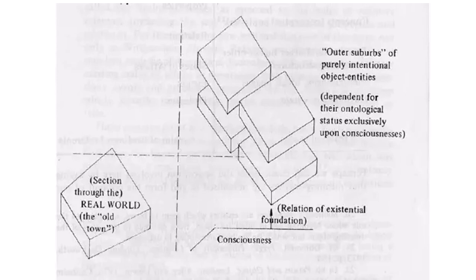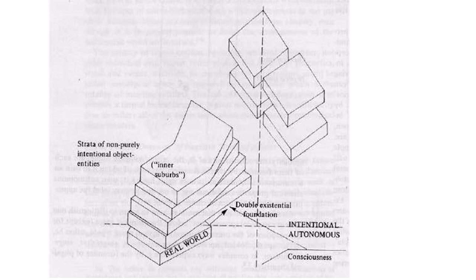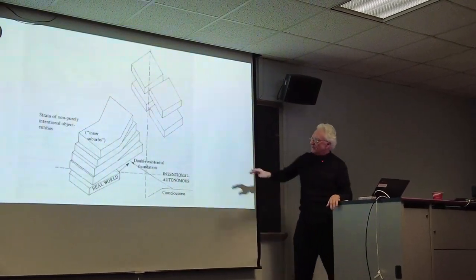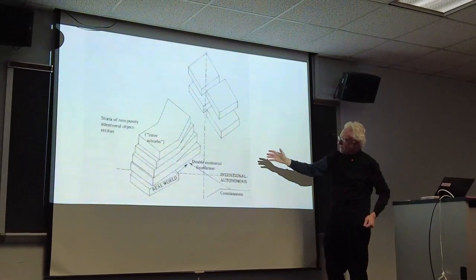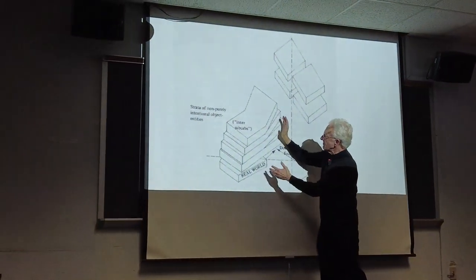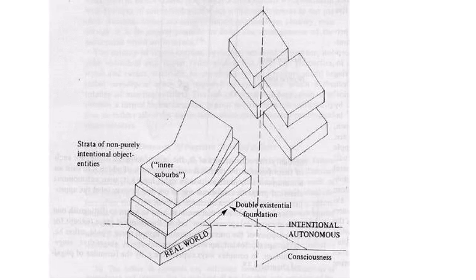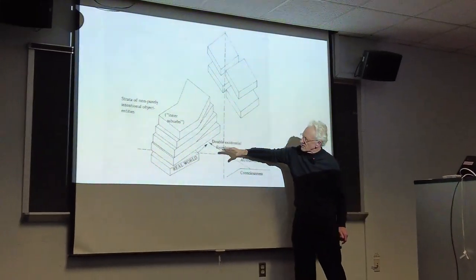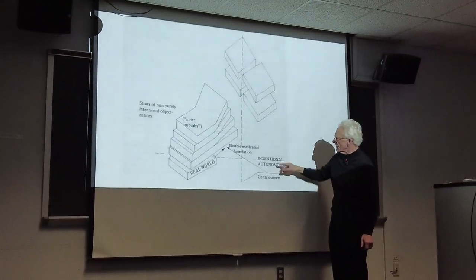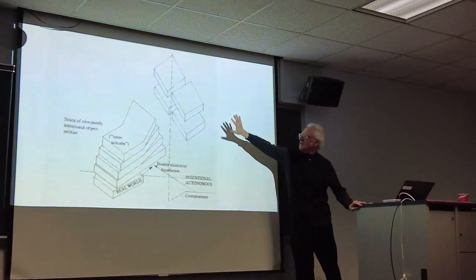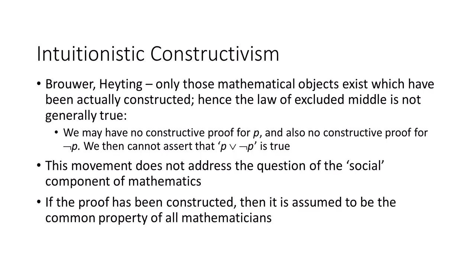There are different kinds of entities we can be directed towards in mental experience. Some of them are autonomous — rocks and planets. Some are intentional but really exist, like Poland. And some are purely intentional — they can be targets but don't exist in any sense — such as Sherlock Holmes in the novel. In a richer diagram, the inner suburbs are counted as part of the real world but are still dependent upon consciousness, and the outer suburbs are fictional entities, basically.